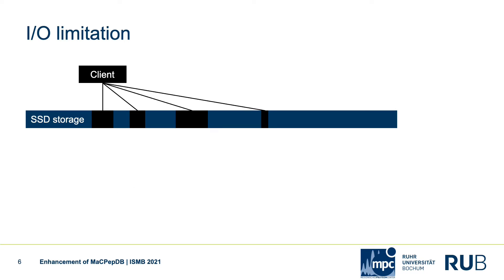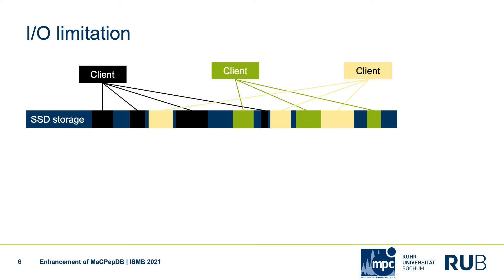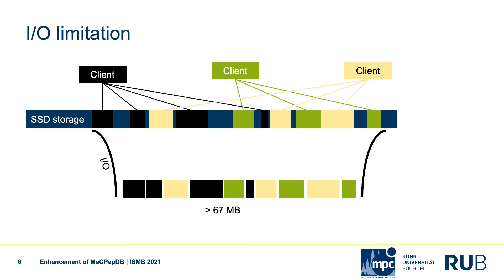When more clients use MacPeptiDB, each of them executing queries with post-translational modifications, even more blocks are read in parallel. Eventually this leads to the full occupation of our storage IO capacity. With MacPeptiDB growing with every UniProt release and more users using MacPeptiDB, this problem gets much worse and causes queries to run several minutes to complete.